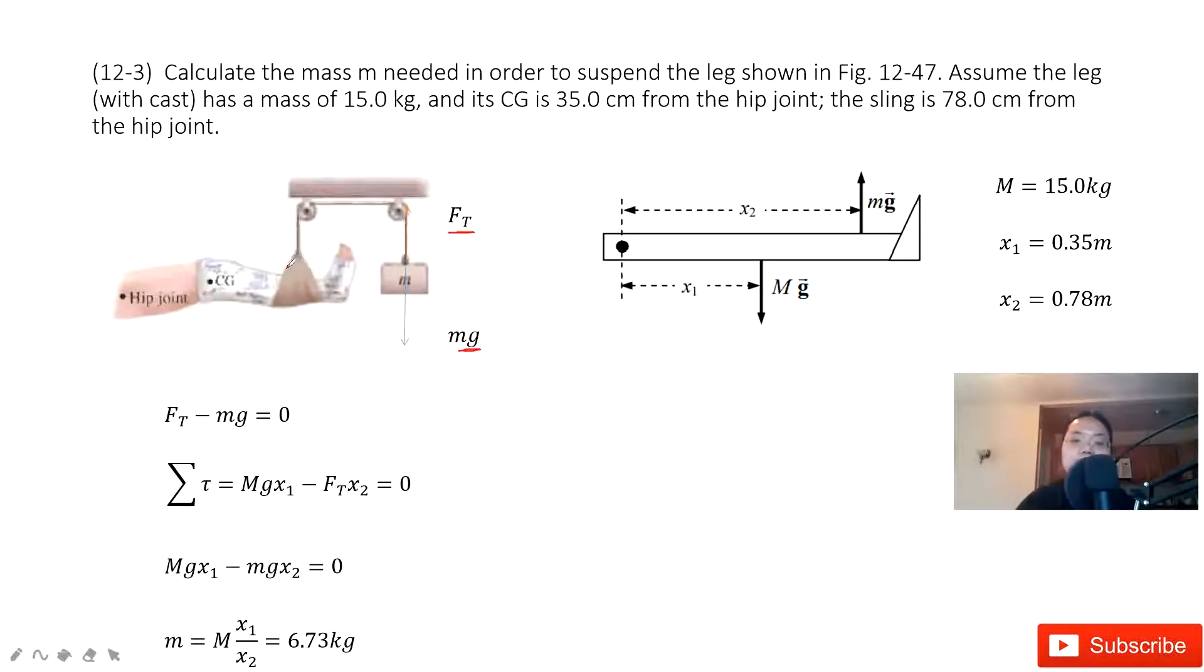If we look at this system, we can see we have the fixed point there. This is the rotation axis. The mass of the leg is given. The tension for this leg Ft equals mg. Also, these two distances x1 and x2 are given.